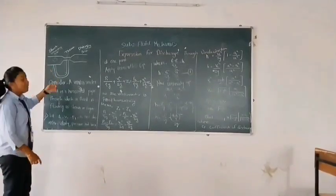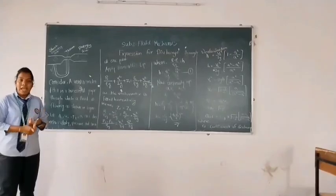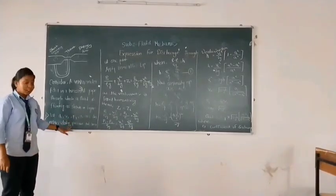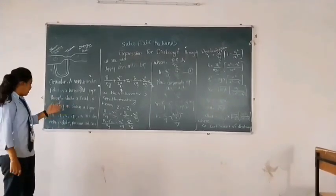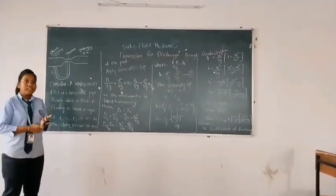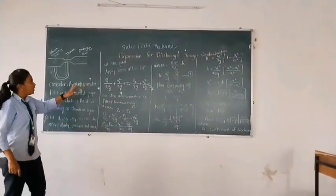P1, V1, A1, and D1 are the pressure, velocity, area, and diameter at point 1. Similarly, P2, V2, A2, and D2 are the pressure, velocity, area, and diameter at point 2.